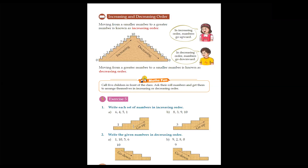As I told you, in increasing order we go from the smaller number to the bigger number. Our first set of numbers is 6, 4, 5, and 1. On the stair, 1 is already mentioned. Our next number is 4, then 5, and last is 6. The smallest number is 1, and we fill the stairs going upward: 1, 4, 5, 6.